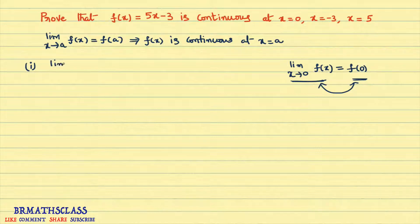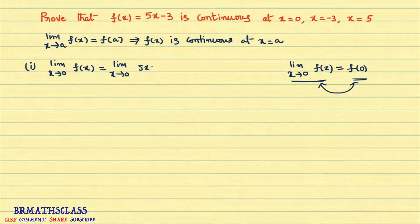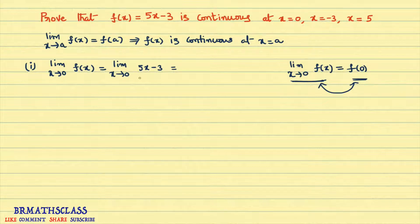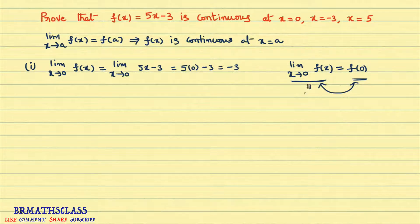Calculate limit as x tends to 0 of f(x). The function is 5x − 3. For any limit problem, we first try the direct method — wherever x appears, we write 0. So we get 5 × 0 − 3. 5 × 0 is 0, and 0 − 3 is −3. So limit as x tends to 0 of f(x) equals −3.